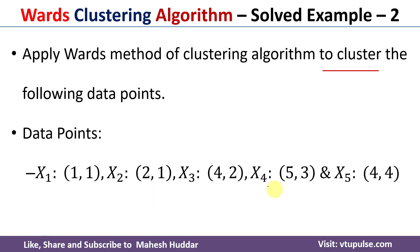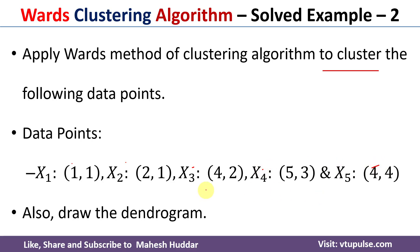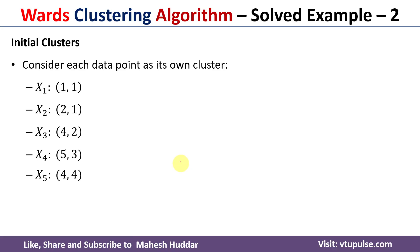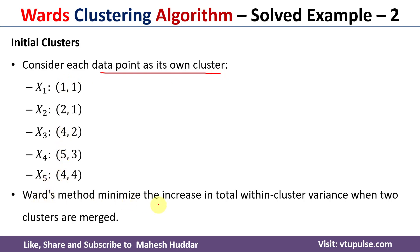These are the data points: x1, x2, x3, x4, and x5. After that we need to draw the dendrogram. In Ward's clustering algorithm, initially we will consider all the data points as their own cluster, so all five data points become initial clusters. Ward's method minimizes the increase in total within-cluster variance when two clusters are merged.